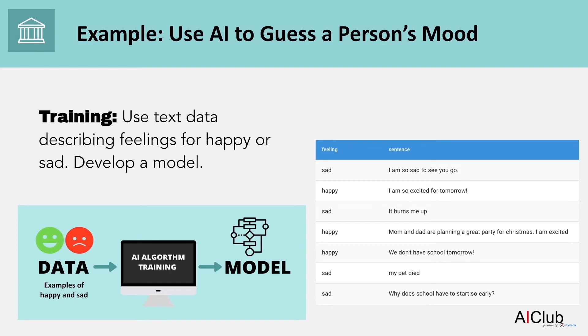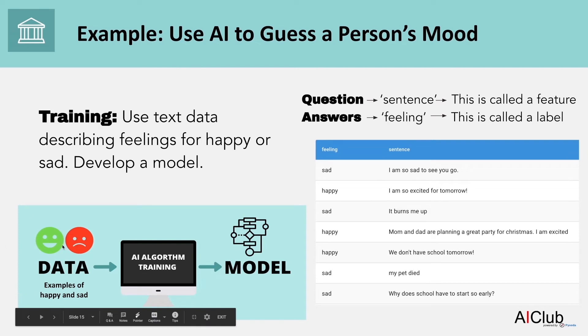Here is another example of providing data to an AI. Two columns. The label column is the feeling, and the feature is the sentence. The AI will get this information as an input, and it is supposed to predict if someone is happy or sad. You can provide a bunch of these examples as data to your algorithm, and the algorithm will recognize patterns in these sentences and create a model.